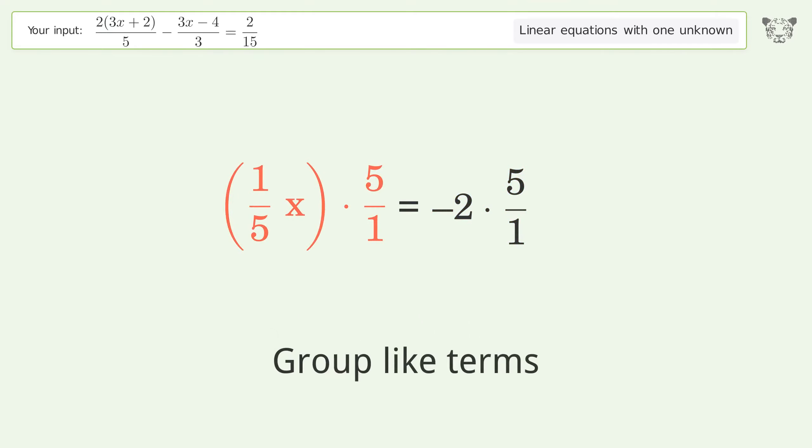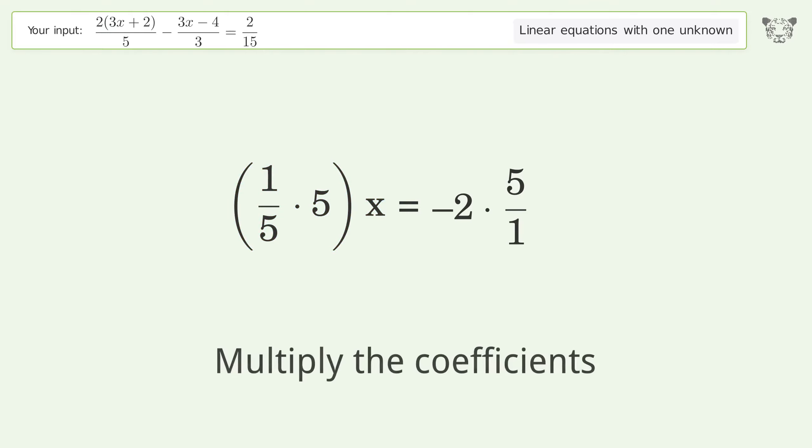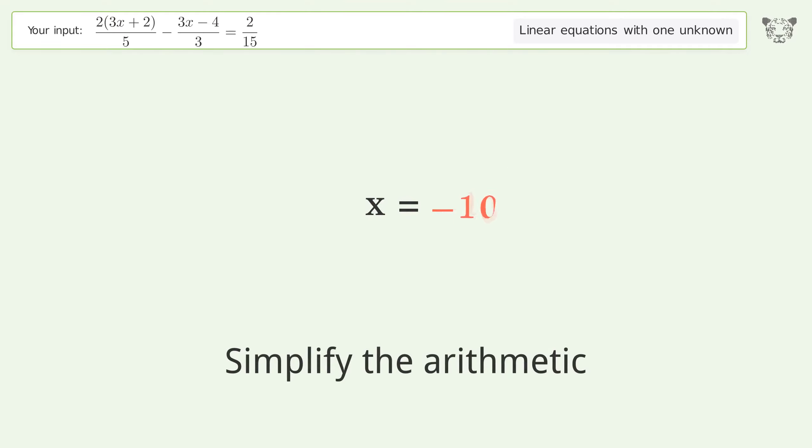Group like terms. Multiply the coefficients. Simplify the fraction. Simplify the arithmetic. And so the final result is x equals negative 10.